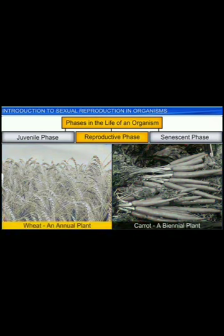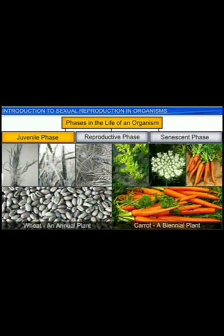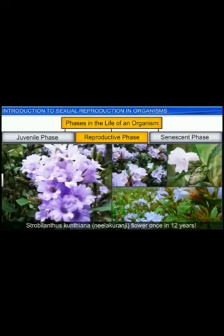However, it is easy to identify the phases in the case of annuals and biennials. All three phases of an annual plant occur in one year, whereas biennials have a two-year life cycle in which the plants enter the vegetative phase in the first year and the reproductive followed by the senescent phase in the second year. Did you know that certain plants such as bamboo flower only once in a hundred years, produce fruits and then die?